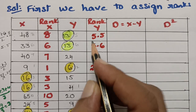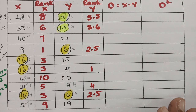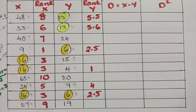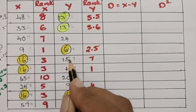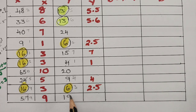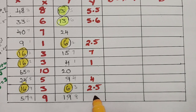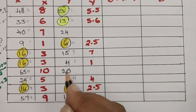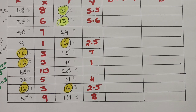The next rank after 6 is 7. After value 13, the next minimum is 15, which gets rank 7. After 15 the least is 19, which gets rank 8. After 19 the next is 20, which gets rank 9. And the final value gets rank 10. So the Y series ranking is now complete.